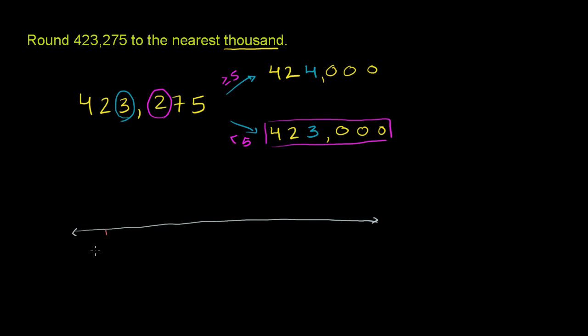you might have 422,000, 423,000, you have 424,000, and then maybe over here you have 425,000. And you could keep going. Now, 423,275 is going to be someplace right around here.